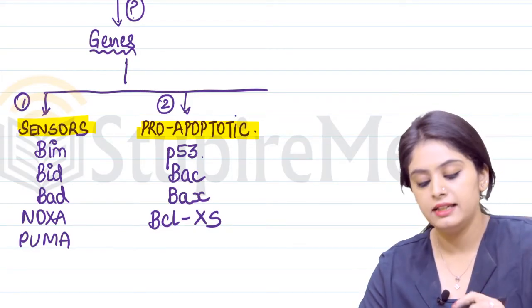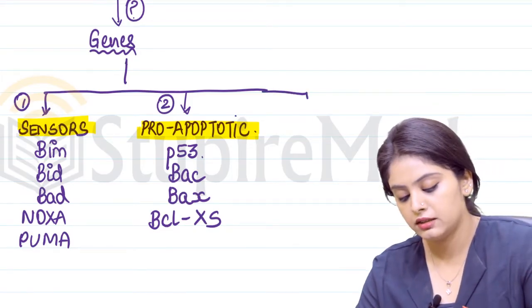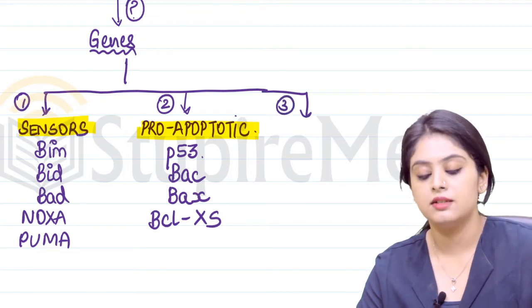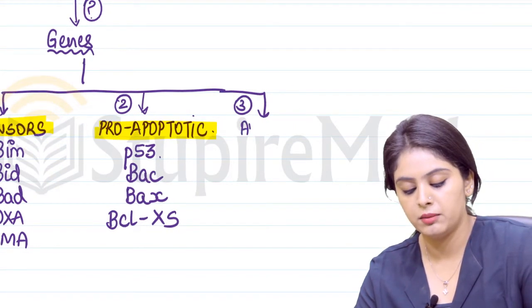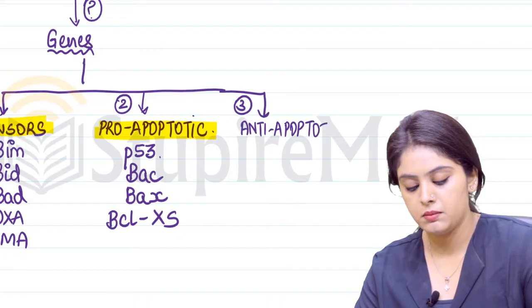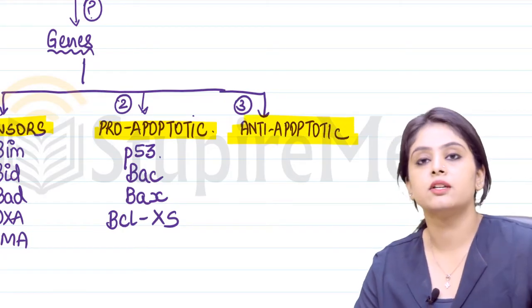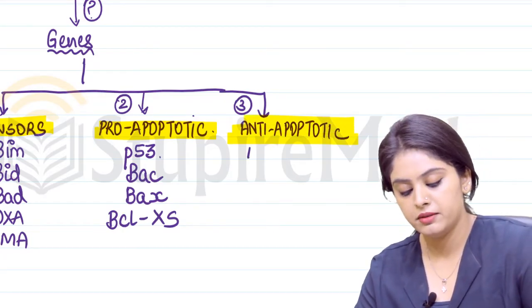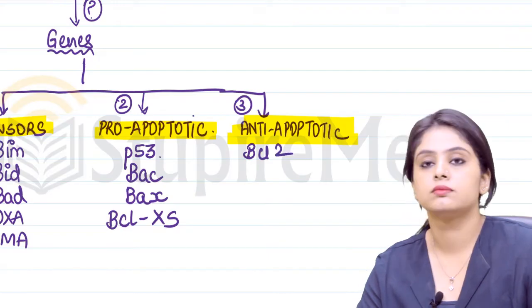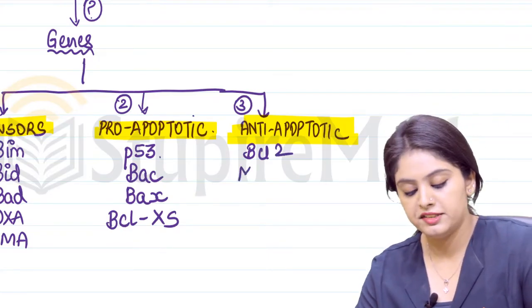If you've done pro, you will also do anti. That becomes our third in the list: anti-apoptotic. What do we have in this particular list? We have BCL-2, MCL-1, and BCL-XL.